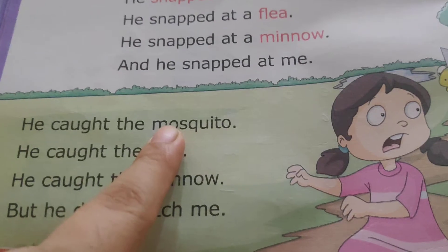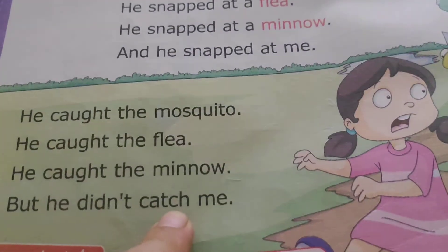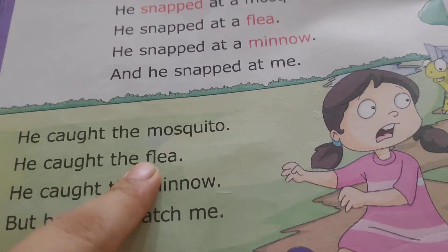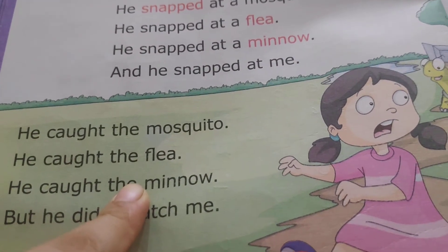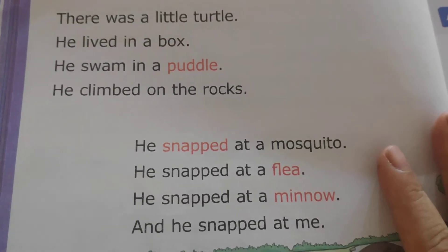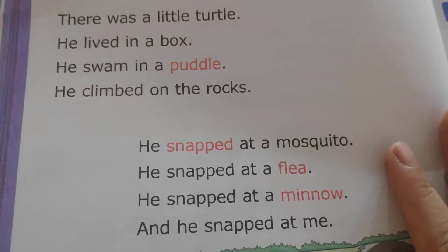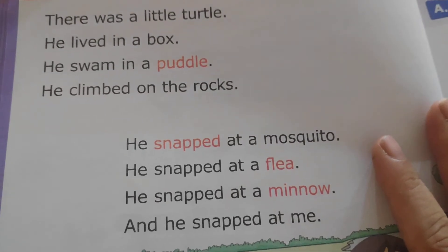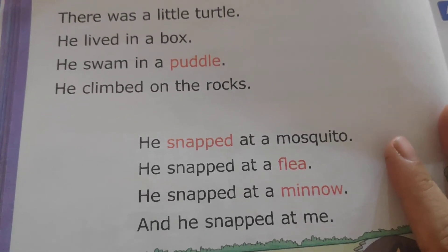He caught the mosquito. He caught the flea. He caught the minnow. But he did not catch me because I ran away from him. So the little poem is about a little turtle. He lives in a little box, he swims in a puddle, he does rock climbing as well, and he eats mosquitoes, fleas, and minnows — that means small fishes.